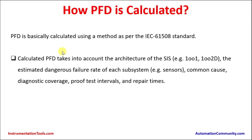How is PFD calculated? PFD is calculated using a method as per IEC 61508 standard. The calculated PFD takes into account the architecture of the SIS — safety instrumented system — such as 1oo1, 1oo2D, 1oo2, 2oo3, etc. It also considers the estimated dangerous failure rate of each subsystem, sensors, common cause, diagnostic coverage, proof test intervals, and repair times of the sensors, logic solvers, and final elements.